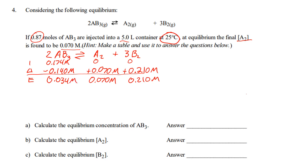And so, we are kind of done. Calculate the equilibrium concentration of AB3. And that is going to be 0.034 molarity. A2 is going to be 0.070 molarity. And B2, that's going to be 0.210 molarity. And that is my final concentration of all that stuff right there.